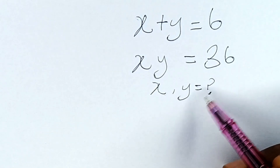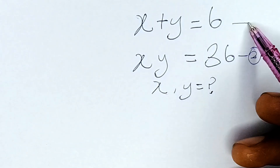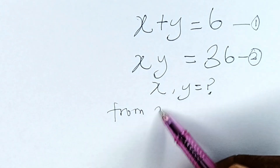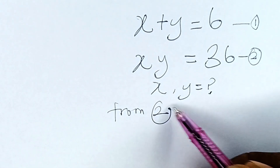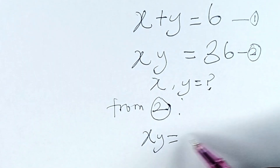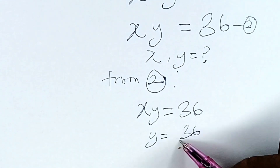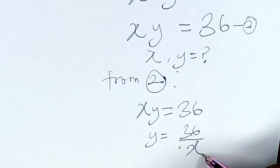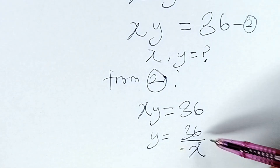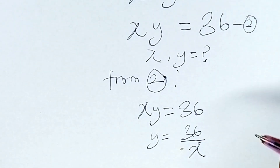The first thing to do here is to say that from equation 2, we have that xy is equal to 36, and therefore y is equal to 36 over x. So this is what it means. Now we are going to put 36 over x in place of y in equation 1.